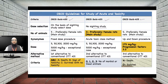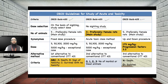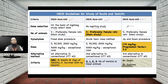In OECD 420, the sighting study involves giving the dose to one animal, observing the effect, and confirming with one more animal before selecting the starting dose for the main study. OECD 423 goes directly to the main study without a sighting study. OECD 425 also has no sighting study. The number of animals used: OECD 420 uses five animals, OECD 423 uses three animals, and OECD 425 uses five animals.